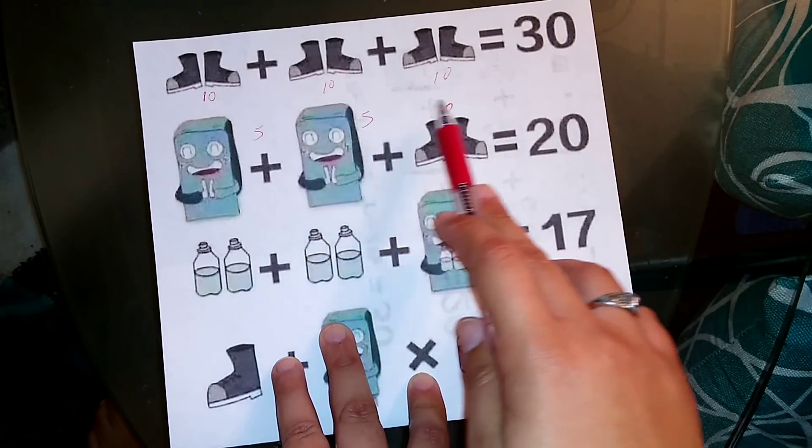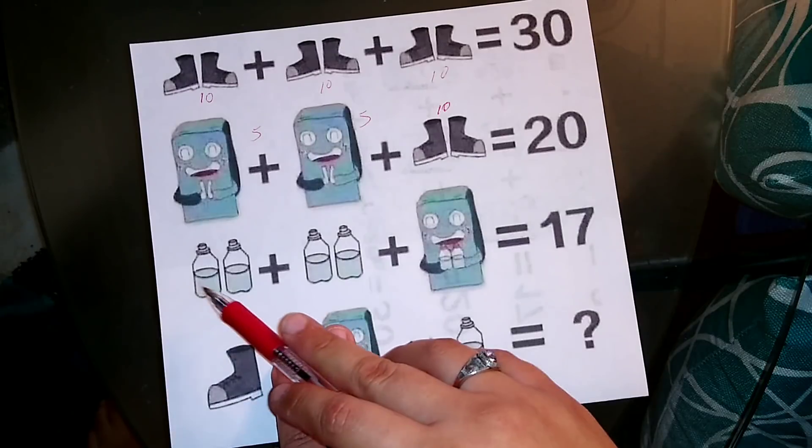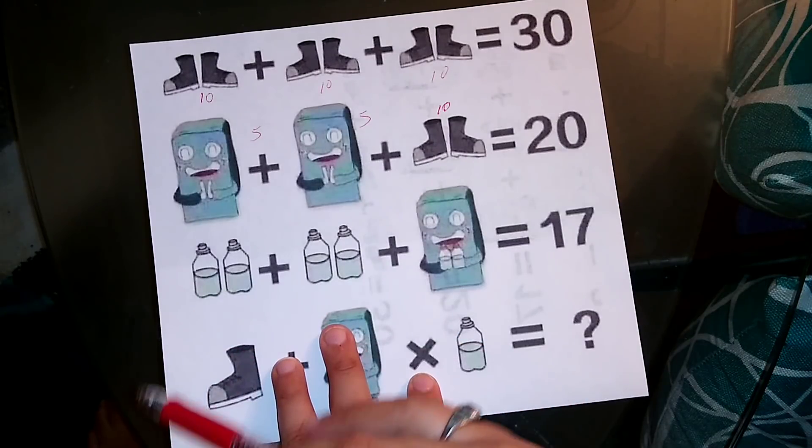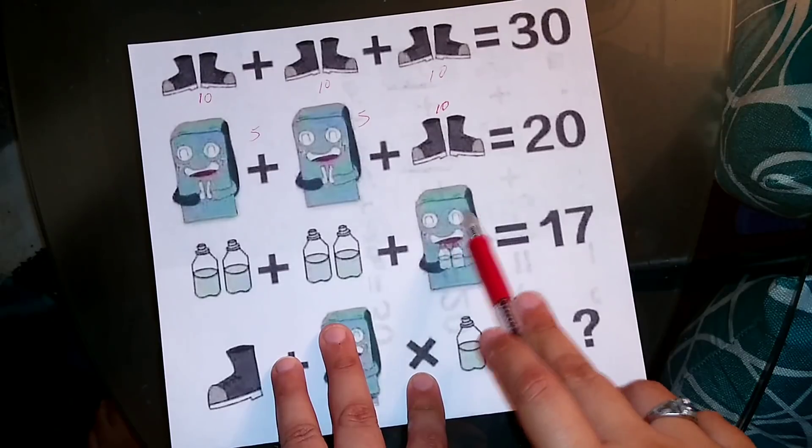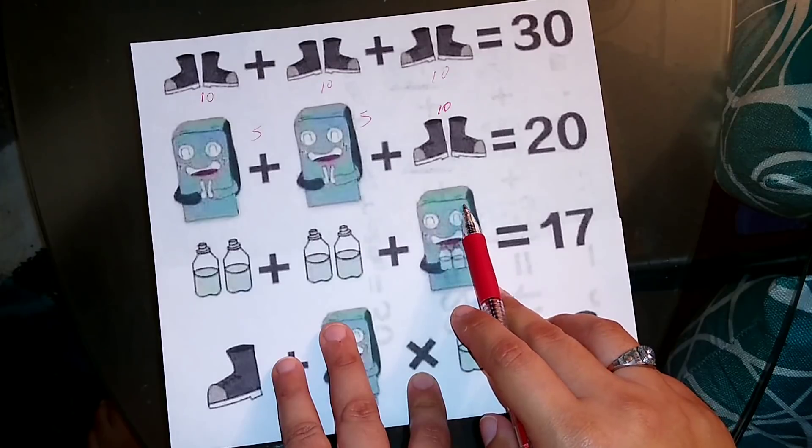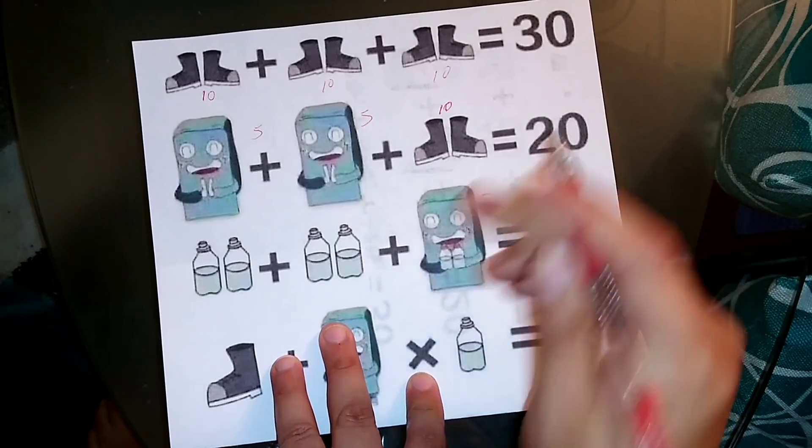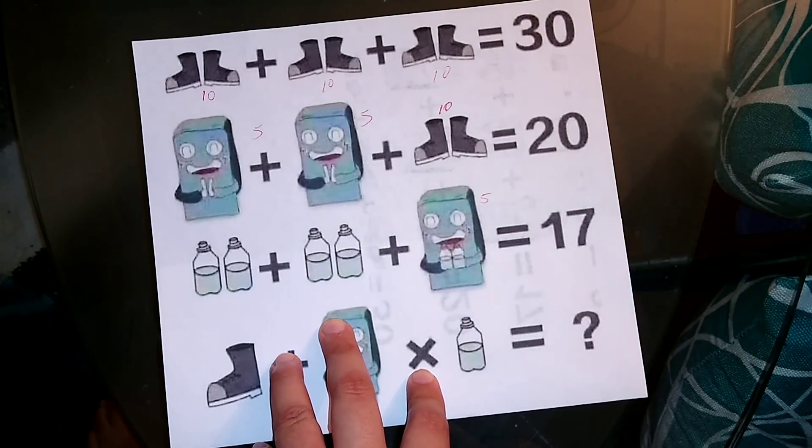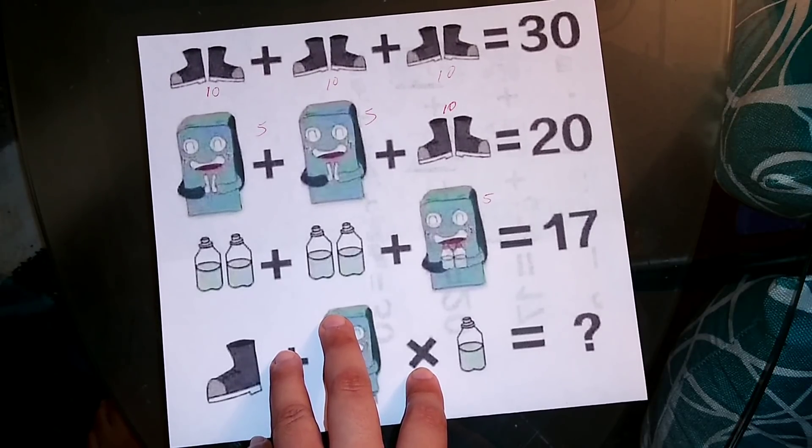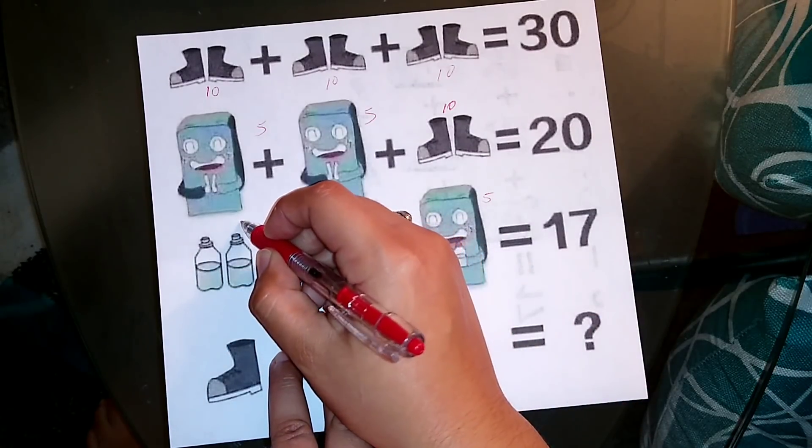Now we have the next row. We have water bottles, but let's start off on this side. We already know the refrigerators are 5, so we have 5 for the refrigerator. What are these? The refrigerator is 5, so then that would mean that each bottle could potentially be 2. So 2 and 2 is 4.